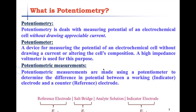What is potentiometry? Potentiometry is all about measuring the potential of an electrochemical cell without drawing appreciable current. A potentiometer is a device used for measuring the potential of an electrochemical cell without drawing current or altering the cell composition. Generally a very high impedance or resistance voltmeter is used for this purpose — note that impedance and resistance are the same concept. Potentiometric measurements are made to determine the difference in potential between a working electrode (also called indicator electrode) and a counter electrode (also called reference electrode).